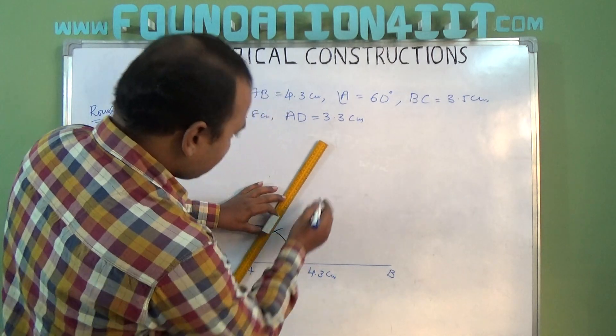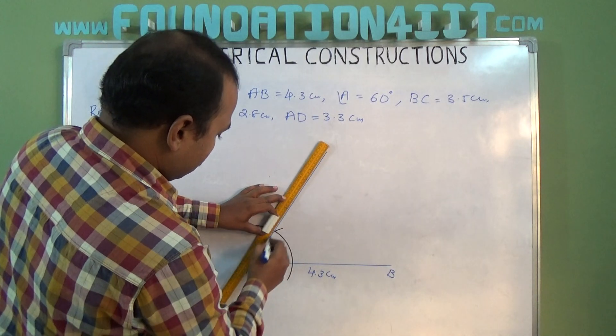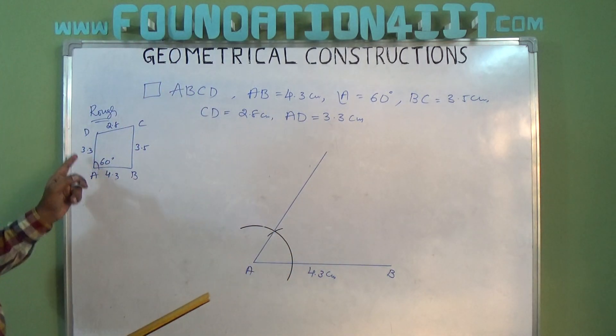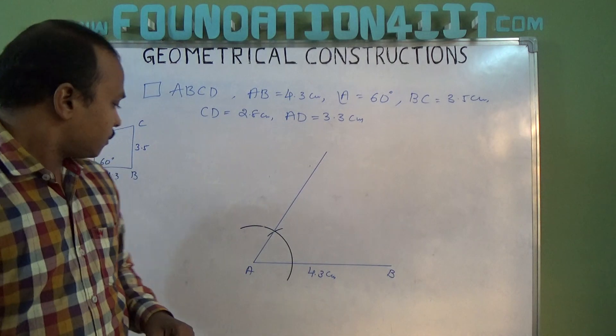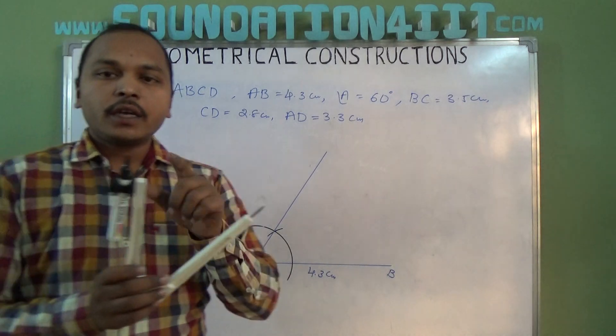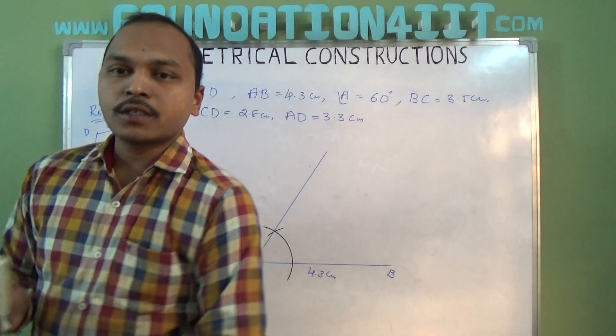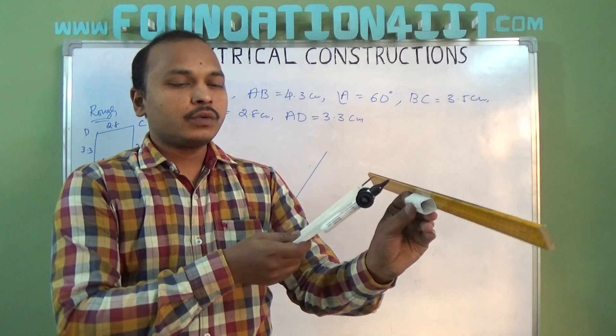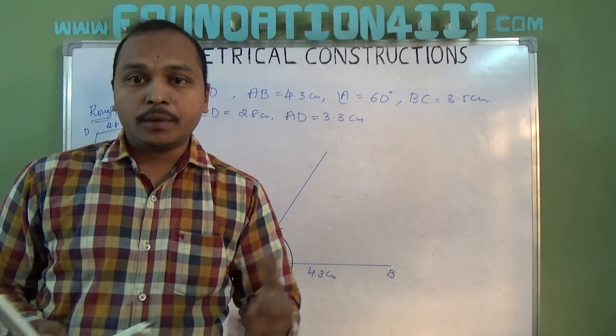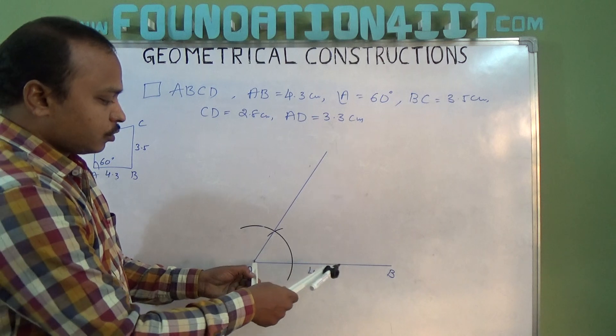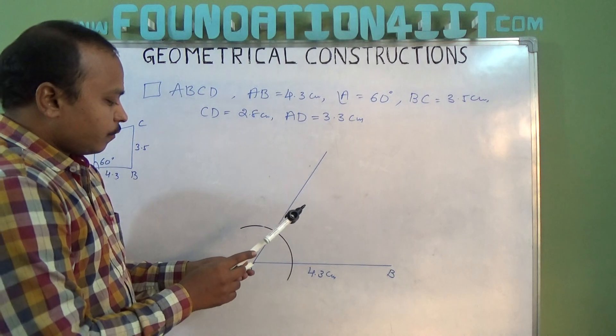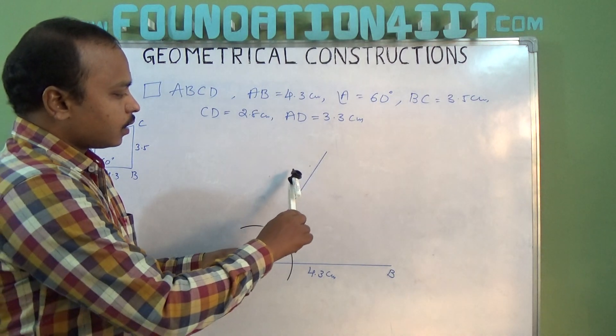In this line only we have A to D as 3.3 centimeters. Using compass, take 3.3 centimeters distance using the scale: 0 to 3.3. A to D is 3.3 centimeters. Take 3.3 distance from here to here.